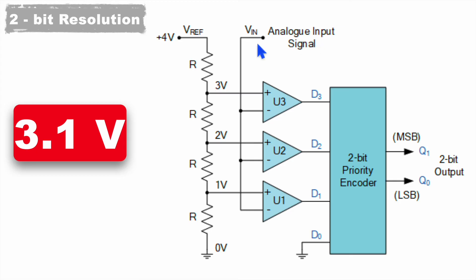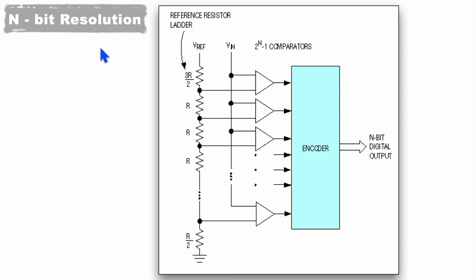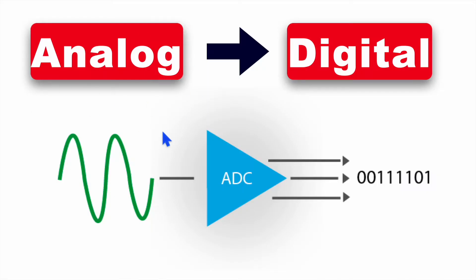As a quick summary: the sample point comes to the comparators, which give the quantized level as input to the priority encoder, and the priority encoder encodes these inputs to give the encoded value in binary form. Similar to this 2-bit resolution, we can have an analog to digital converter for n-bits as well — for n-bit resolution we need 2^n − 1 comparators, which will give output for n number of bits. This was a brief explanation about the analog to digital converter. Let me know if you have any doubts or queries. Thank you for watching this video.